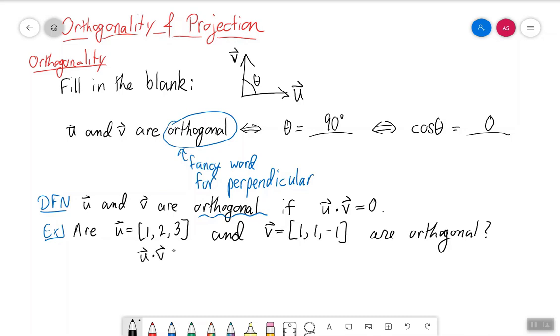u dotted with v is 1 times 1 plus 2 times 1 plus 3 times negative 1, or minus 3. So this is 3 minus 3, which is 0. So therefore, yes, the two vectors u and v are indeed orthogonal.